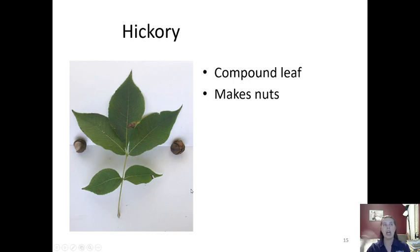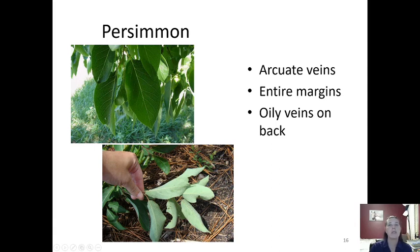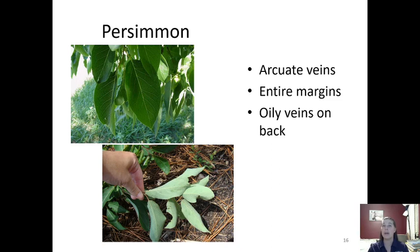The compound leaf of hickory looks kind of like ash, and hickory has nuts — a lot of times when you see a hickory tree there'll be nuts on the ground below it. Next we'll look at persimmon. Persimmon has arcuate veins, meaning the vein follows the margin of the leaf, coming up and curving along the edge. The margins are entire, so there's no tooth on the edge. On the back you can see oily-looking veins. Persimmon also generates fruit at the end of summer that's usually bright orange — in Colonial Williamsburg they use persimmon fruit to create wreaths and decorate houses.